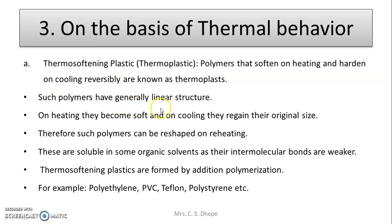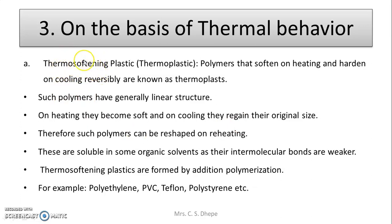Such polymers generally have a linear structure. They become soft when you heat them, and on cooling they regain their original size. That is why they are called thermosoftening — by heating you can make them soft, and you can reshape and reuse them.